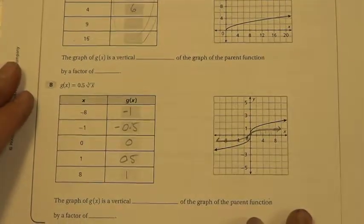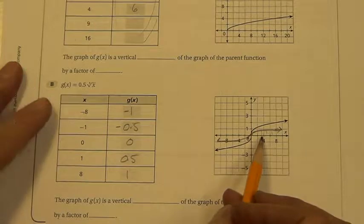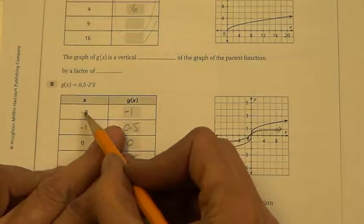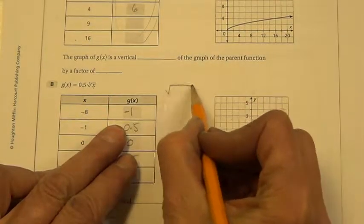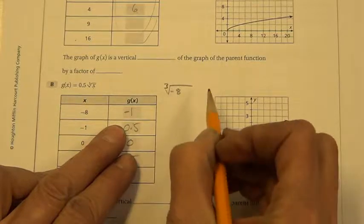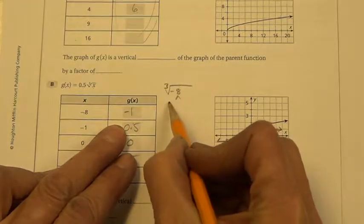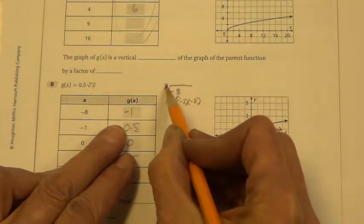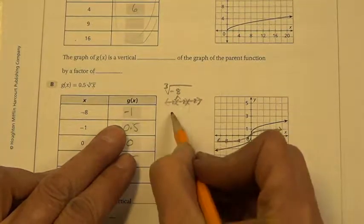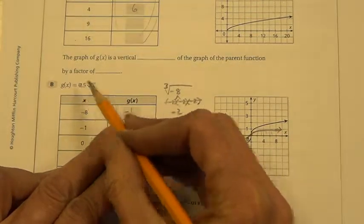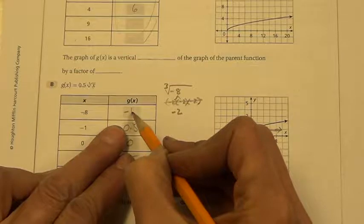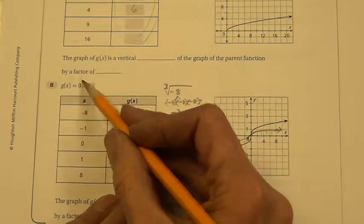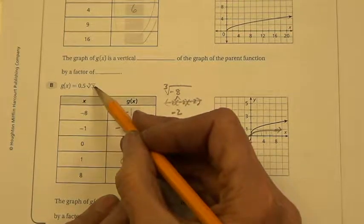Go to the next one. We went ahead and we graphed this one. The cube root got a little bit confusing for students. So we plug in negative 8 into the cube root. And we break it down. It goes negative 2 times negative 2 times negative 2. And because there's a 3 out there, it takes 3 to get 1 out, so it equals negative 2. Half of negative 2 is negative 1. Then go ahead and plug in these other values and get the cube root of those and multiply it by 1 half.